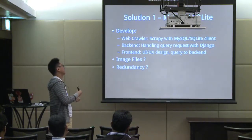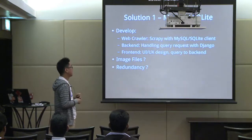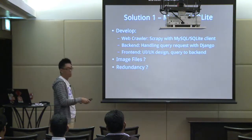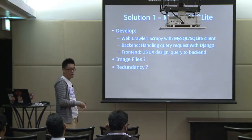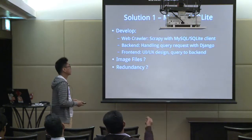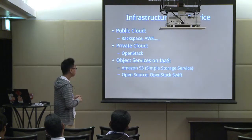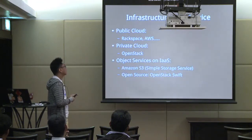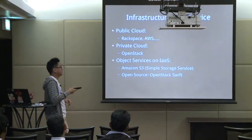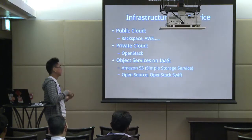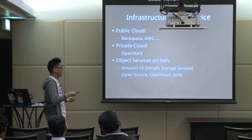At the back end, I have another back end program to handle API requests with Django. At the front end, I do some UI work and make API calls to the back end server to get the data. But how about the image files? How can I handle them? And how about the redundancy of the data? There are good solutions. In Infrastructure as a Service, we can use a public cloud such as Rackspace or AWS, or an OpenStack-based cloud, to deploy my project. In IaaS, we have different object storage services — in Amazon we have S3, and in OpenStack we have Swift.